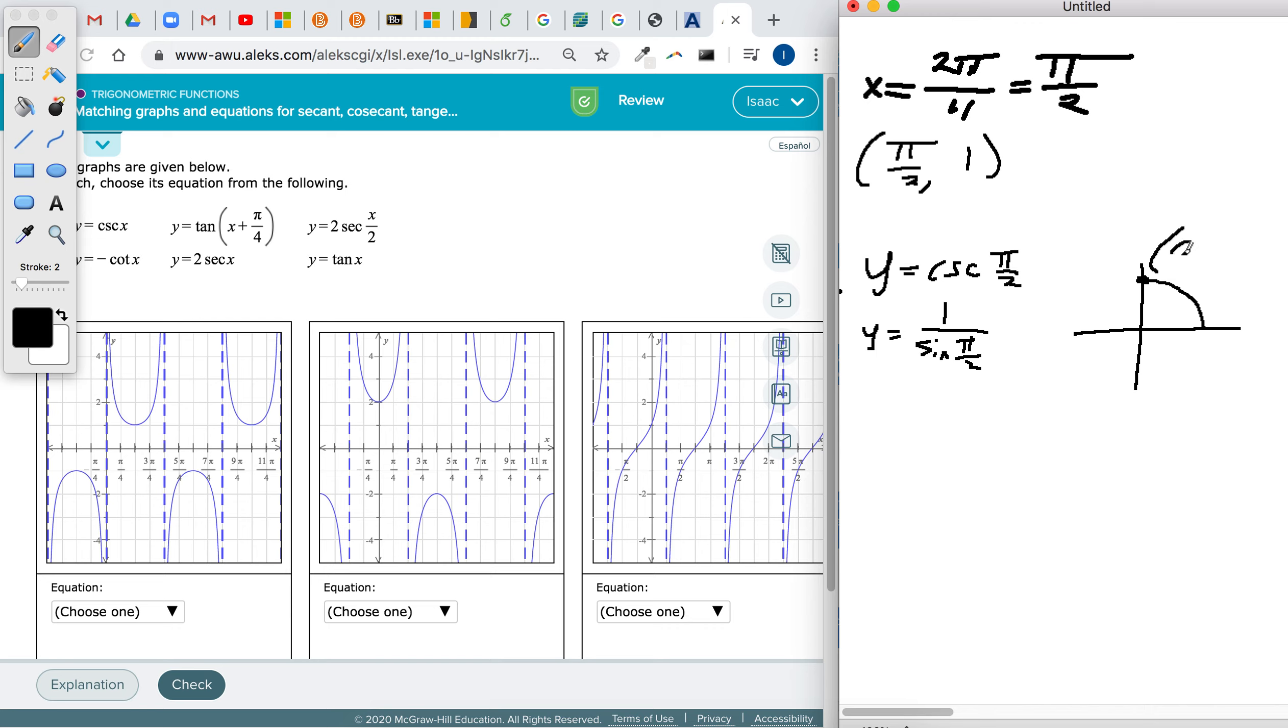And now, cosine is the x coordinate of whatever angle you make. Sine is the y coordinate. So y equals 1 over 1, that gives us 1. So this one, this graph, has y equals cosecant x as an option.